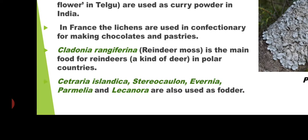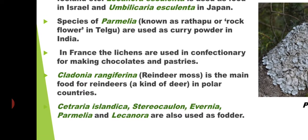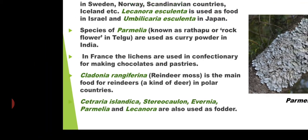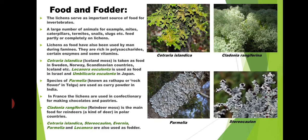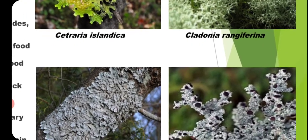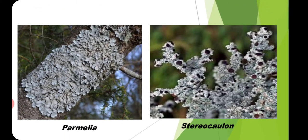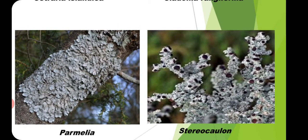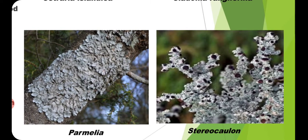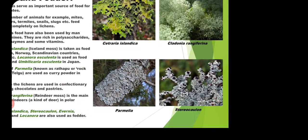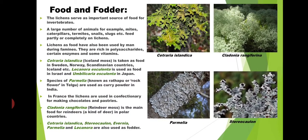Species including Cetraria icelandica, Sticta, Parmelia, Lacanora, and related lichens are all used as fodder. The brown patches visible on the thallus are nothing but apothecia. These are the lichens which are used as food and fodder.